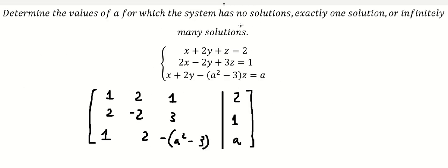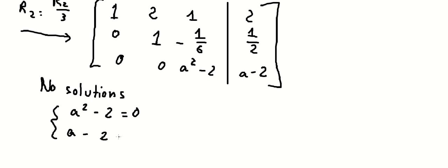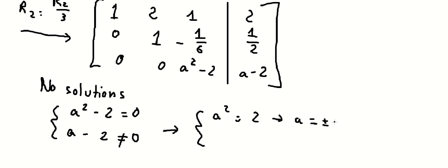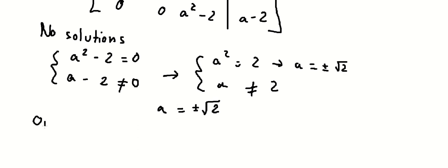For no solutions, we follow the rule of the third row: a squared minus two equals zero, and a minus two cannot equal zero. So a equals positive or negative square root of two. After we apply the square root to both sides, a cannot equal two. Combining these conditions, we can accept the appropriate values of a.